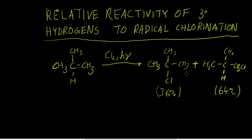If you remember from the hyperconjugation video, tertiary radicals are more stable than primary radicals. So why is it that we observe less tertiary product than we do primary product? Well, in 2-methylpropane there's only one tertiary hydrogen, whereas there are nine primary hydrogens.